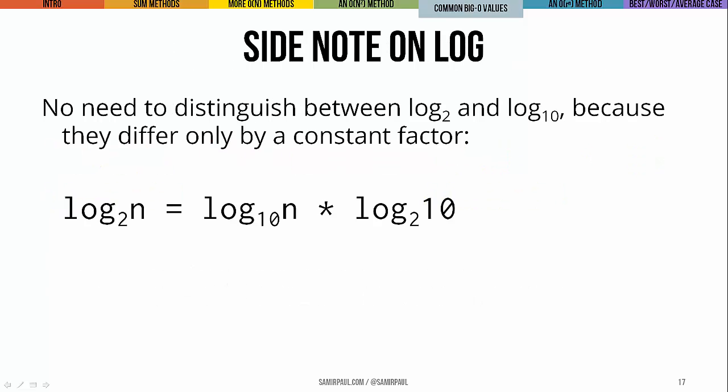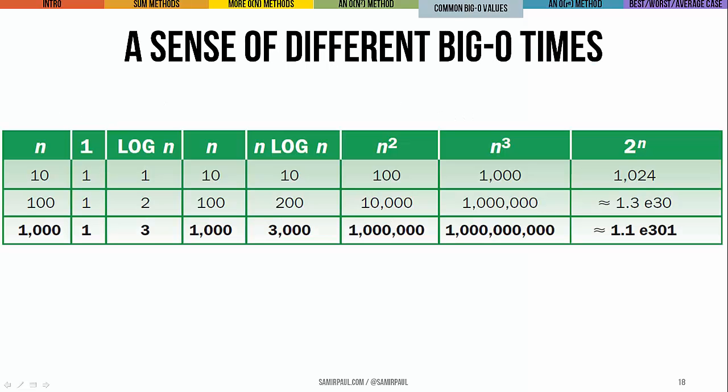A quick side note: when doing complexity analysis, we don't need to distinguish between base two and base ten logs, because they really only differ by a constant factor. You can see this through the change of base formula. If you want to get a sense of how the common big O values vary with n, take a look at the reference table using base ten logarithms.